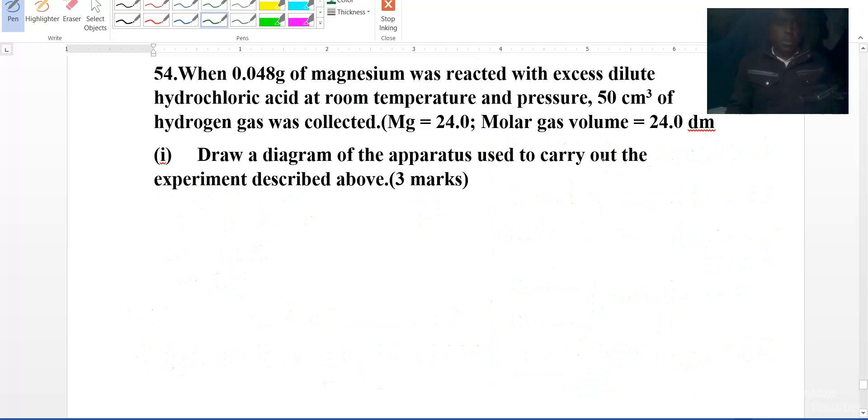When 0.048 grams of magnesium was reacted with excess dilute hydrochloric acid at room temperature and pressure, 50 centimeters cubed of hydrogen gas was collected. Draw the diagram of the apparatus used to carry out the experiment.